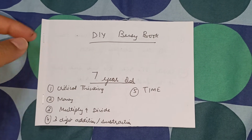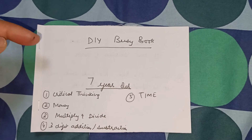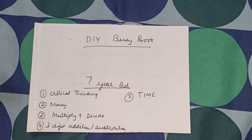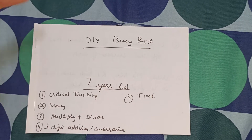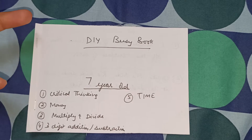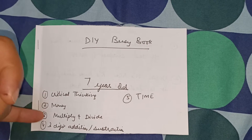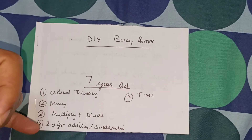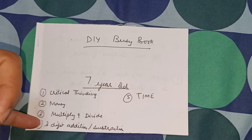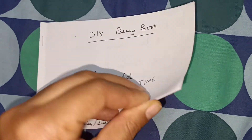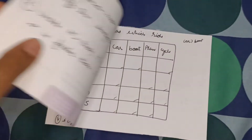My today's busy book is for my 7-year-old. We are covering 5 topics: critical thinking, money, multiply and divide, 3-digit addition and subtraction — which is a little new for her because it's more complicated — and time. So let's start with the first one.